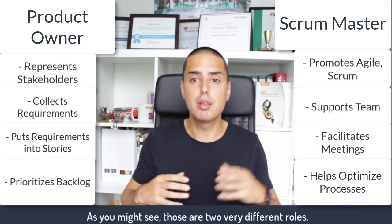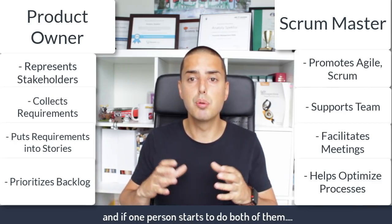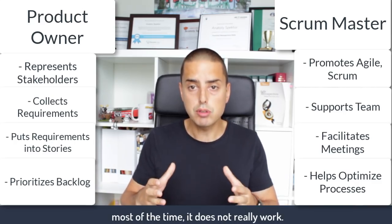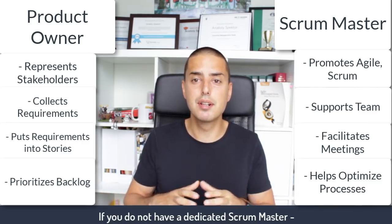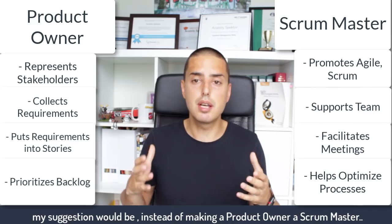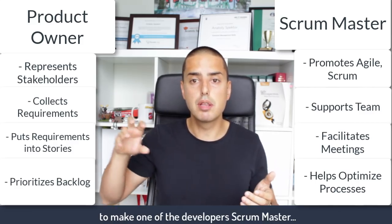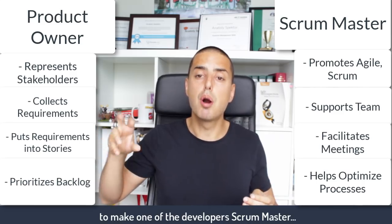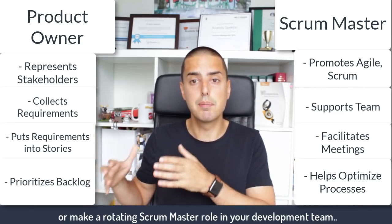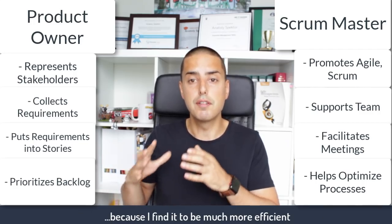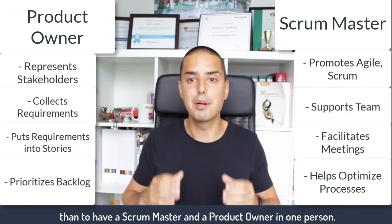As you might see, those are two very different roles, and if one person starts to do both of them, most of the time it doesn't really work. If you don't have a dedicated scrum master, my suggestion would be instead of making the product owner a scrum master, to make one of the developers the scrum master, or make a rotating scrum master role in your development team — because I find that to be much more efficient than having a scrum master and product owner in one person.